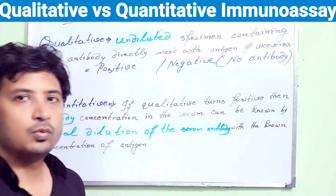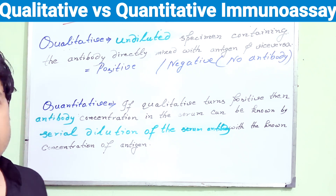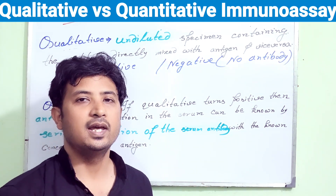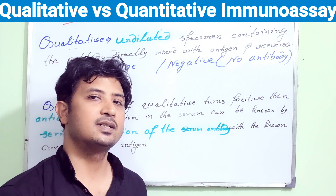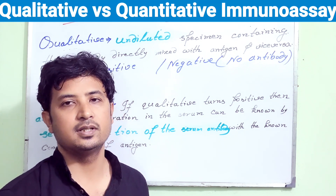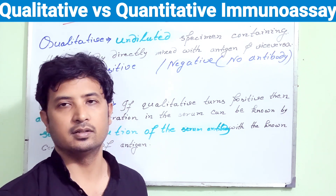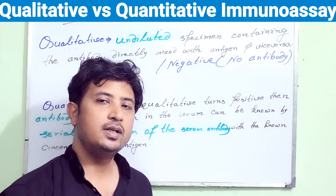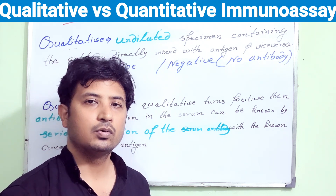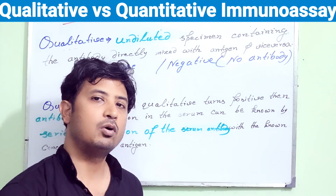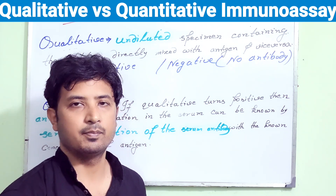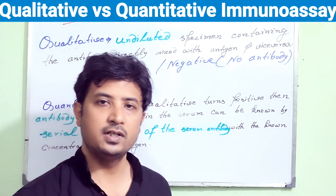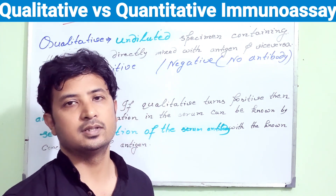Now, coming to quantitative: if a qualitative test turns positive, we may want to know the exact concentration of the antibody or the antigen present in the patient's serum. Quantitation gives us the quantity of the antigen or antibody in the patient's sample. Qualitative tells you presence or absence; if it is present, quantitative tells you the concentration.